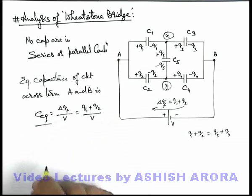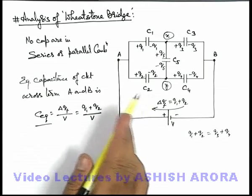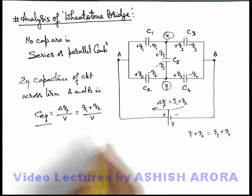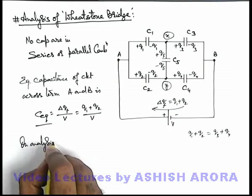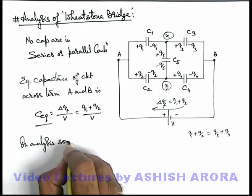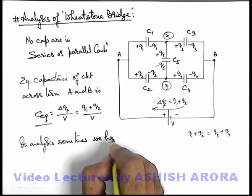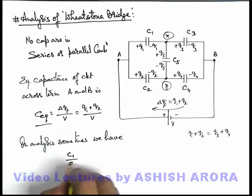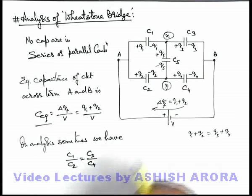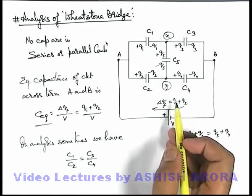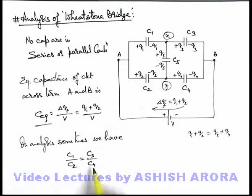And another important fact which can happen sometime with such circuits which we call Wheatstone Bridge is, on analysis, sometimes we have C1 by C2 is equal to C3 by C4. In some circuits it is possible that the ratio of these two capacitors and these two capacitors become equal.